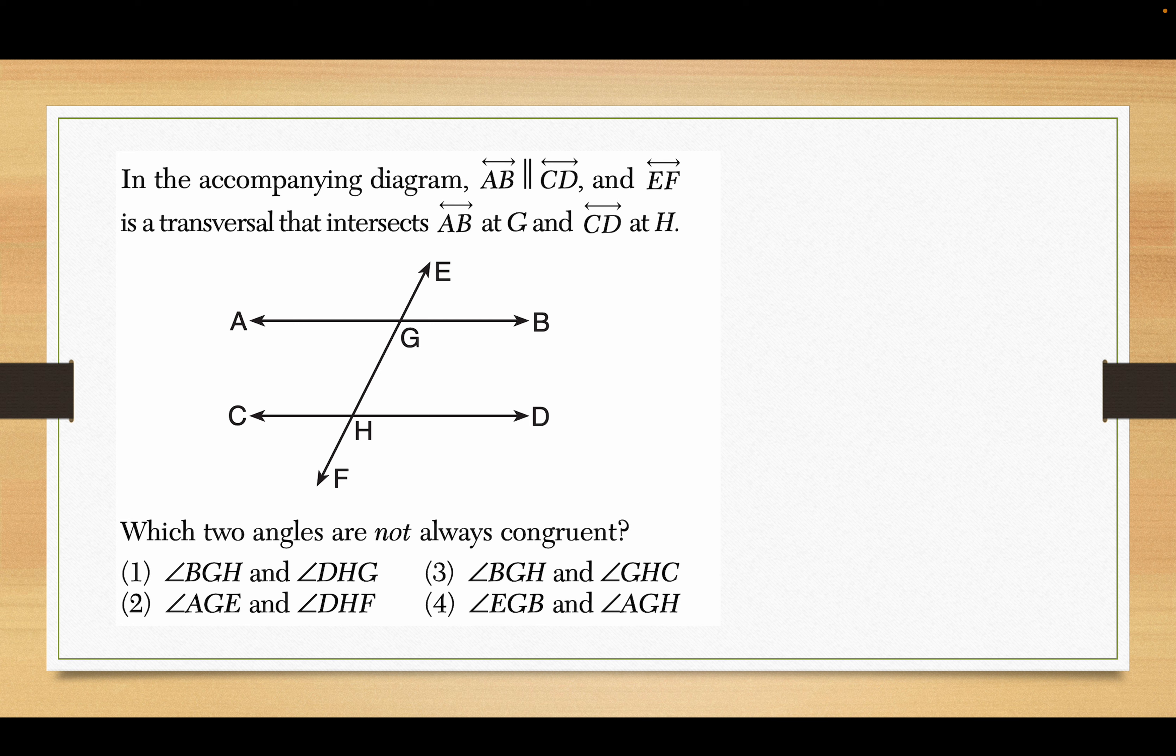So, which of these two guys are not always going to be congruent? Well, those two guys that will not always be congruent are choice one. Angle BGH is here and angle DHG is here. That's one acute and one obtuse. And we said in this particular diagram, if one is acute and one is obtuse, clearly they're not equal because acute is less than 90, obtuse greater than 90, less than 180. But they also have to add up to 180.